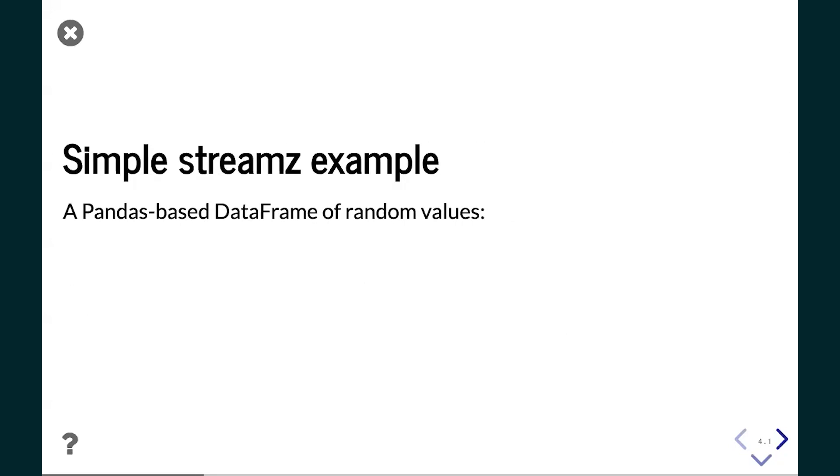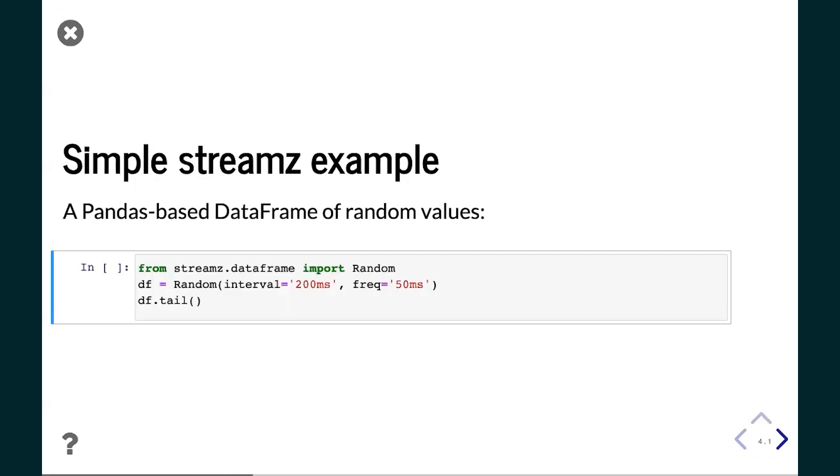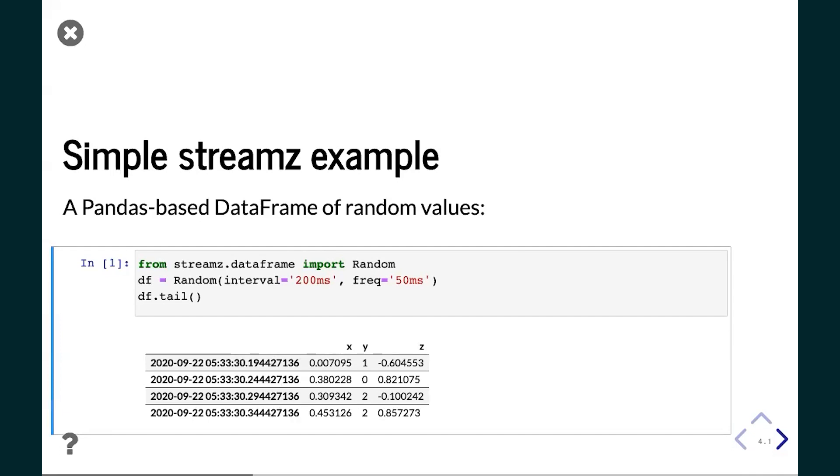Just to give you a really concrete example of what Streamz looks like, here's a simple Streamz dataframe. As you can see, if I look at the tail of it, it will continually be updated to show the latest timestamp and several random values. This particular one is random and it's an example we'll use throughout this talk. At the end of the talk I'll show you how to use your own data sources, whatever they are, just by writing a couple lines of Python code to pull or query your data.